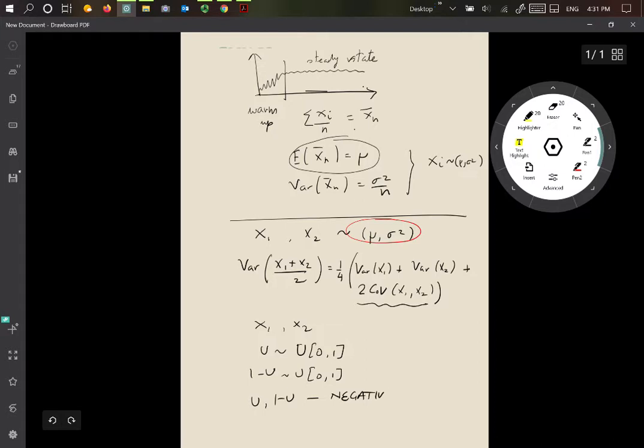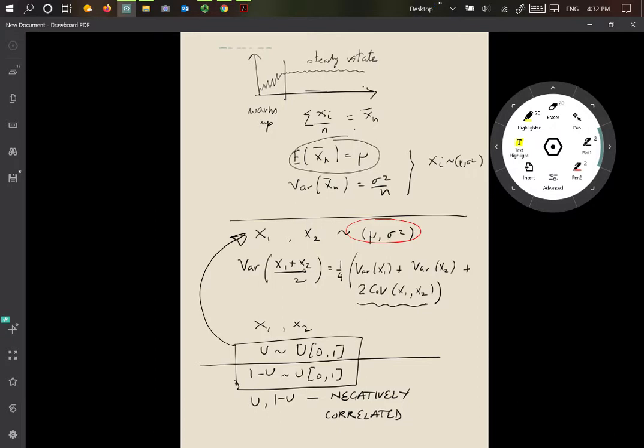And this is because when u is smaller, for example, 1 minus u is larger, and the other way around. So these two values, u and 1 minus u, these two values over here satisfy this particular relationship, that they're drawn from the same distribution and also they're negatively correlated, and therefore when you look at the variance of using x1 plus x2 over 2, then this is going to be actually reducing the variance.